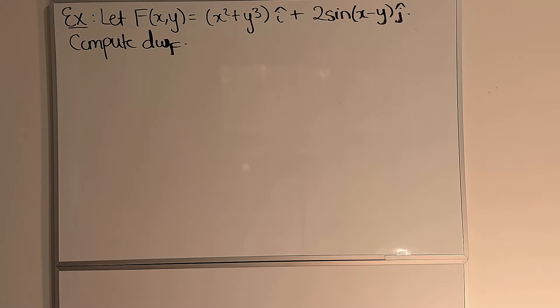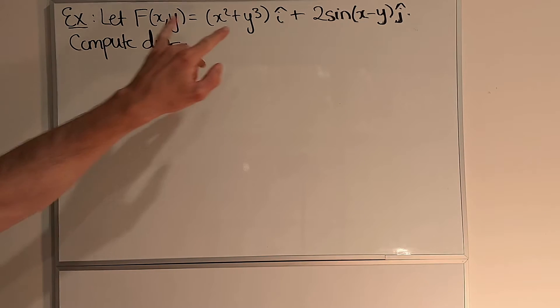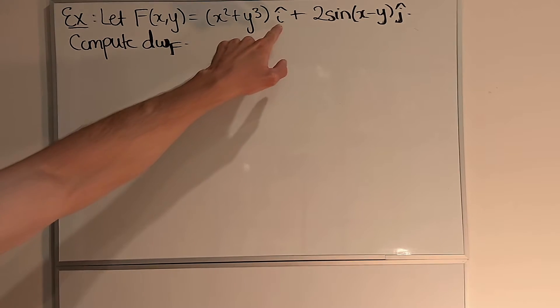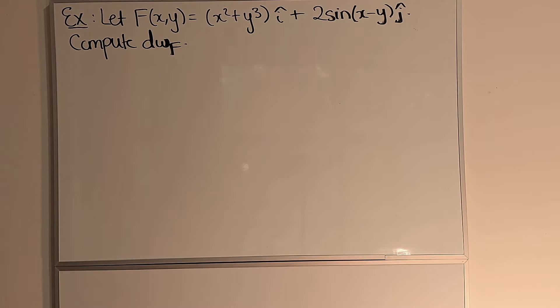We have a vector field F which is given by F = (x² + y³)î + 2sin(x-y)ĵ. We want to compute the exterior derivative of the one-form associated to F.